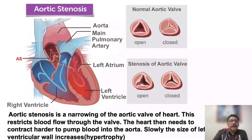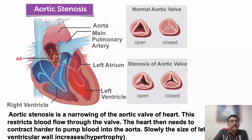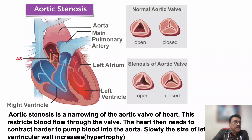The aortic valve is placed at the outlet of the left ventricle. Through this valve, blood goes to the aorta and to the systemic circulation. Normally, when there is pressure from the left ventricle, the valve opens during left ventricular systole, and blood passes to the aorta and systemic circulation.